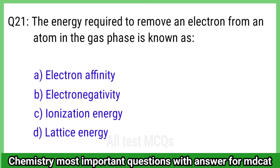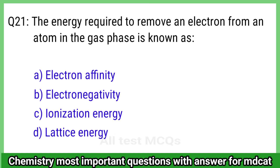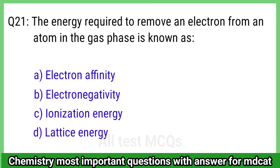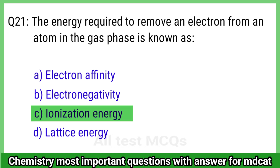Question 21: The energy required to remove an electron from an atom in the gaseous state is known as? The right answer is option C, ionization energy.